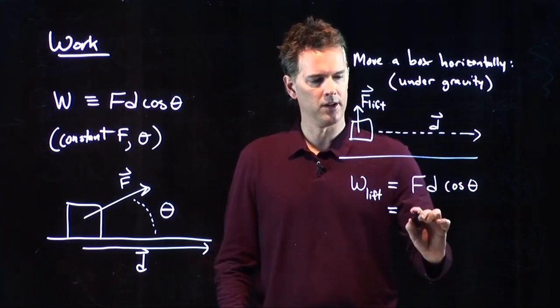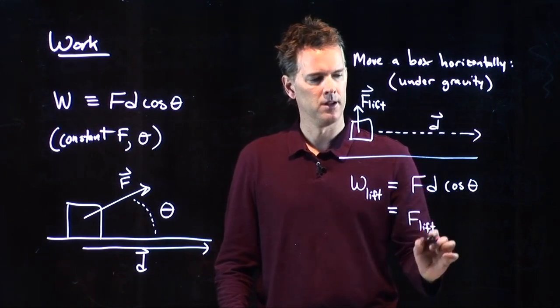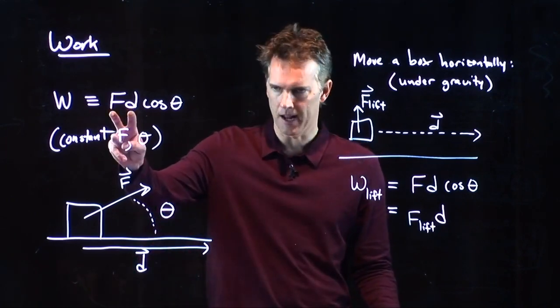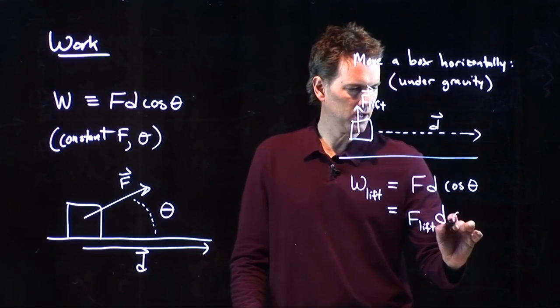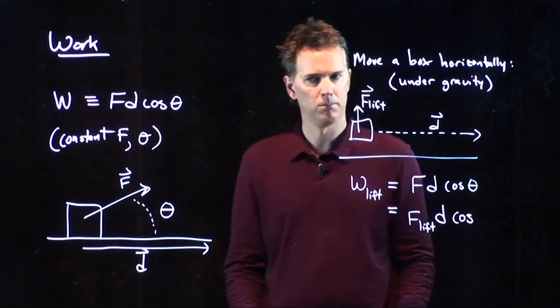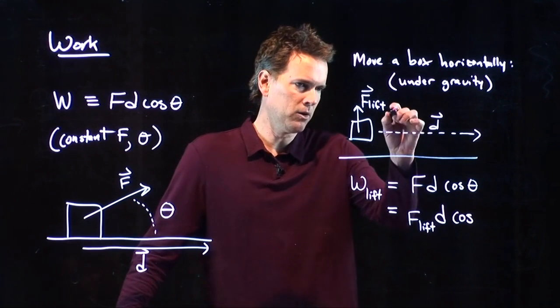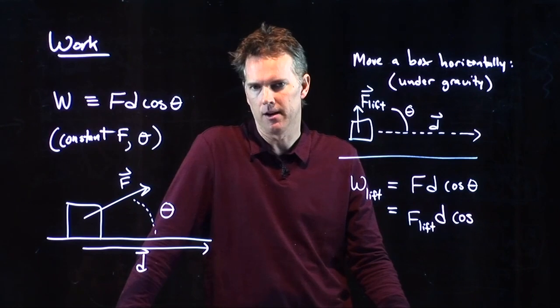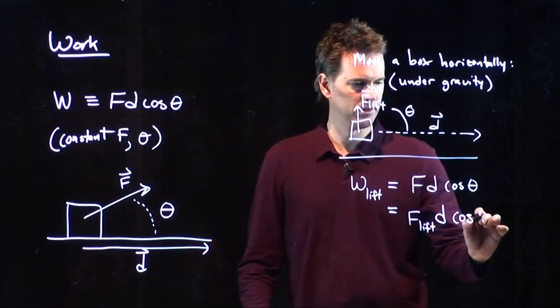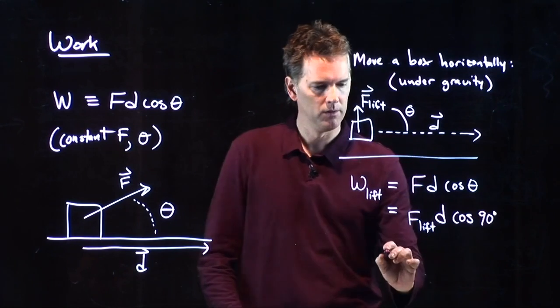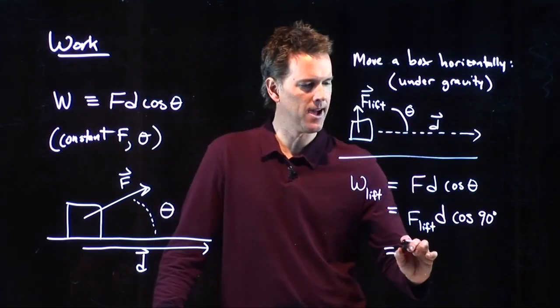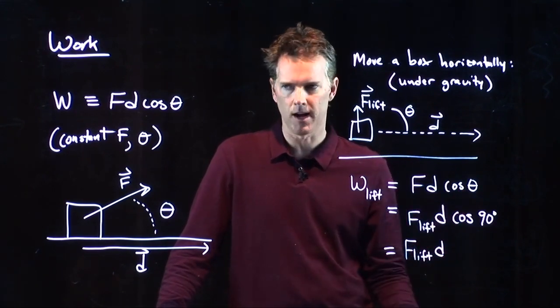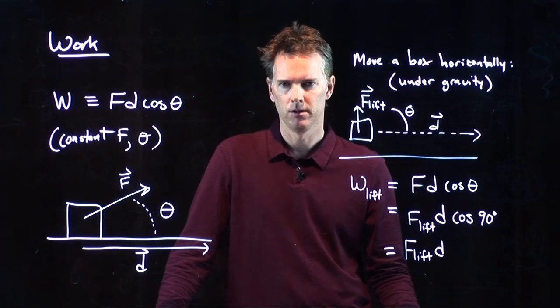F is just the lifting force. D is the distance that we go. Those are scalar quantities. And then we have the cosine of the angle between them. What is the angle between those two? It's that right there. And that has to be 90 degrees. So what is the work? It is F lift times D. What's the cosine of 90 degrees? Zero.